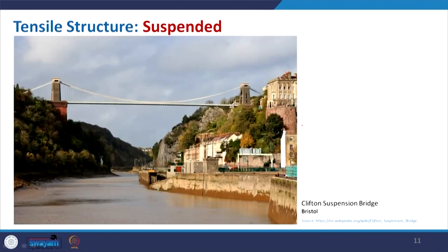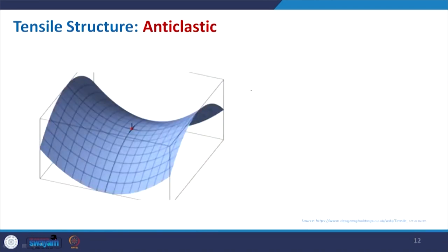Another example is the Clifton Suspension Bridge in Bristol. You can see how it has been made — it looks very similar to the Golden Gate Bridge — and is another example in the same category of suspended tensile structures.